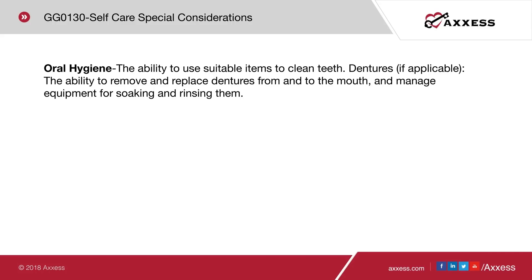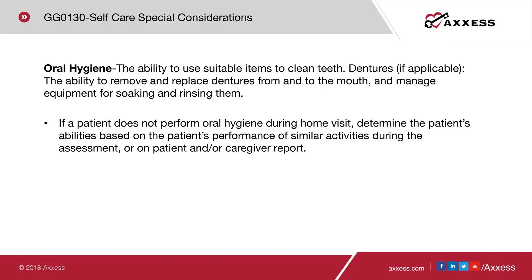Special considerations for oral hygiene: the ability to use suitable items to clean teeth, dentures if applicable, including the ability to remove and replace dentures and manage equipment for soaking and rinsing them. If a patient does not perform oral hygiene during your home care visit, determine abilities based on performance of similar activities during the assessment or on patient and/or caregiver report.